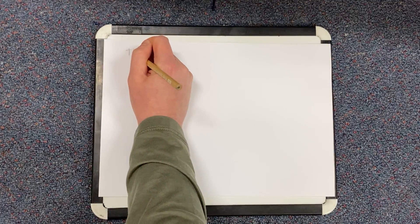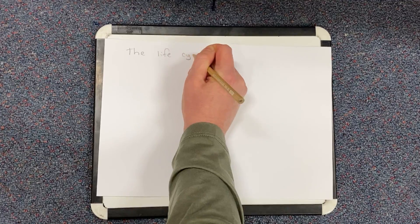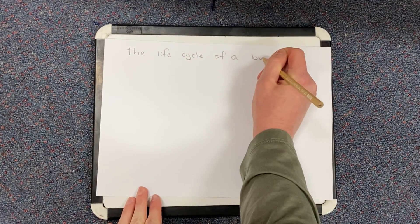So the first thing you're going to need for your explanation diagram is a heading. So my heading is going to be the life cycle of a butterfly.